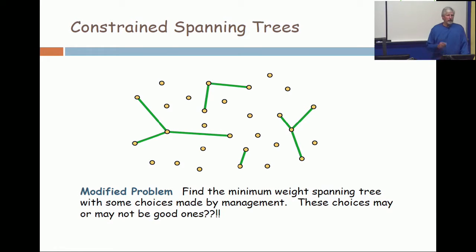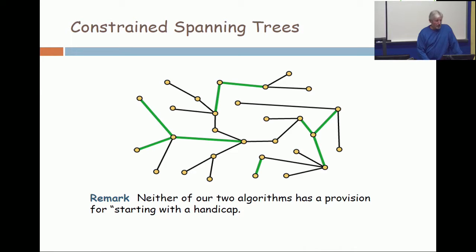And so the problem, then, is if management tells you that you must use these edges, how can you find a spanning tree of minimum weight but subject to the handicap that it must include these? Now, I use the word handicap carefully because it's a constraint, and the constraint that management gives you may be terrible. But you could have a good manager, and they could give you a configuration that's optimal to this point, and they're just asking you to complete the task. What I'm suggesting with this picture is that you must live with the green choices, and then you have to find additional ones to form a spanning tree, but the total of the weights on all the edges is supposed to be as small as possible.